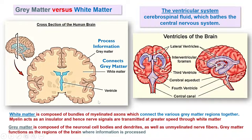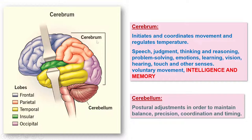In a cross-section of the brain, the outer region is dense with neurons — called gray matter — while white matter connects different brain parts. White matter is composed of bundles of myelinated (insulated) axons, allowing nerve signals to be transmitted at greater speed without leakage. Gray matter, composed of neuronal cell bodies and dendrites, is where information is processed. The ventricular system consists of brain ventricles bathed in cerebrospinal fluid.